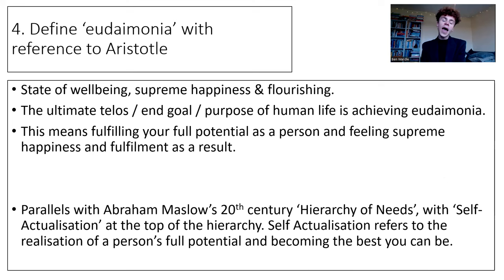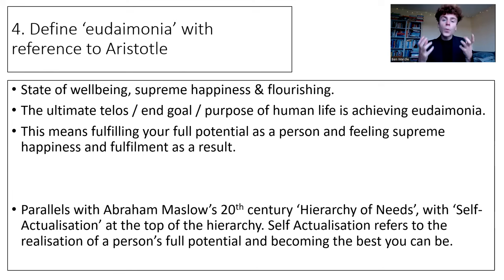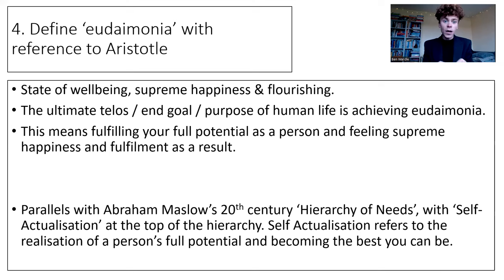Question four: define eudaimonia with reference to Aristotle. He believed eudaimonia is a state of well-being, of supreme happiness and flourishing. It is not just being happy because you've enjoyed a favourite meal or won money in the lottery. This idea of eudaimonia goes beyond temporary happiness — it is this state of supreme happiness, of flourishing, when you've fulfilled your full potential. You feel fulfilled, you've been the best you can be. Our ultimate telos as human beings is to achieve eudaimonia: fulfilling your full potential as a person and feeling supreme happiness and fulfilment as a result.